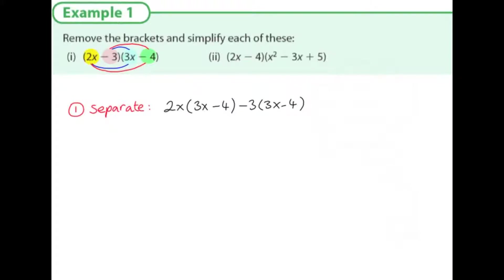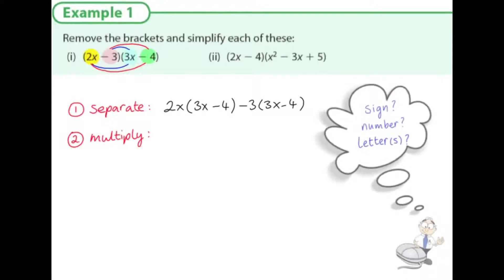The second step is we are ready to multiply. To multiply, there are three things we must be aware of: the sign, the number, and the letters. We think about each of these three things separately — that will stop us from making mistakes.